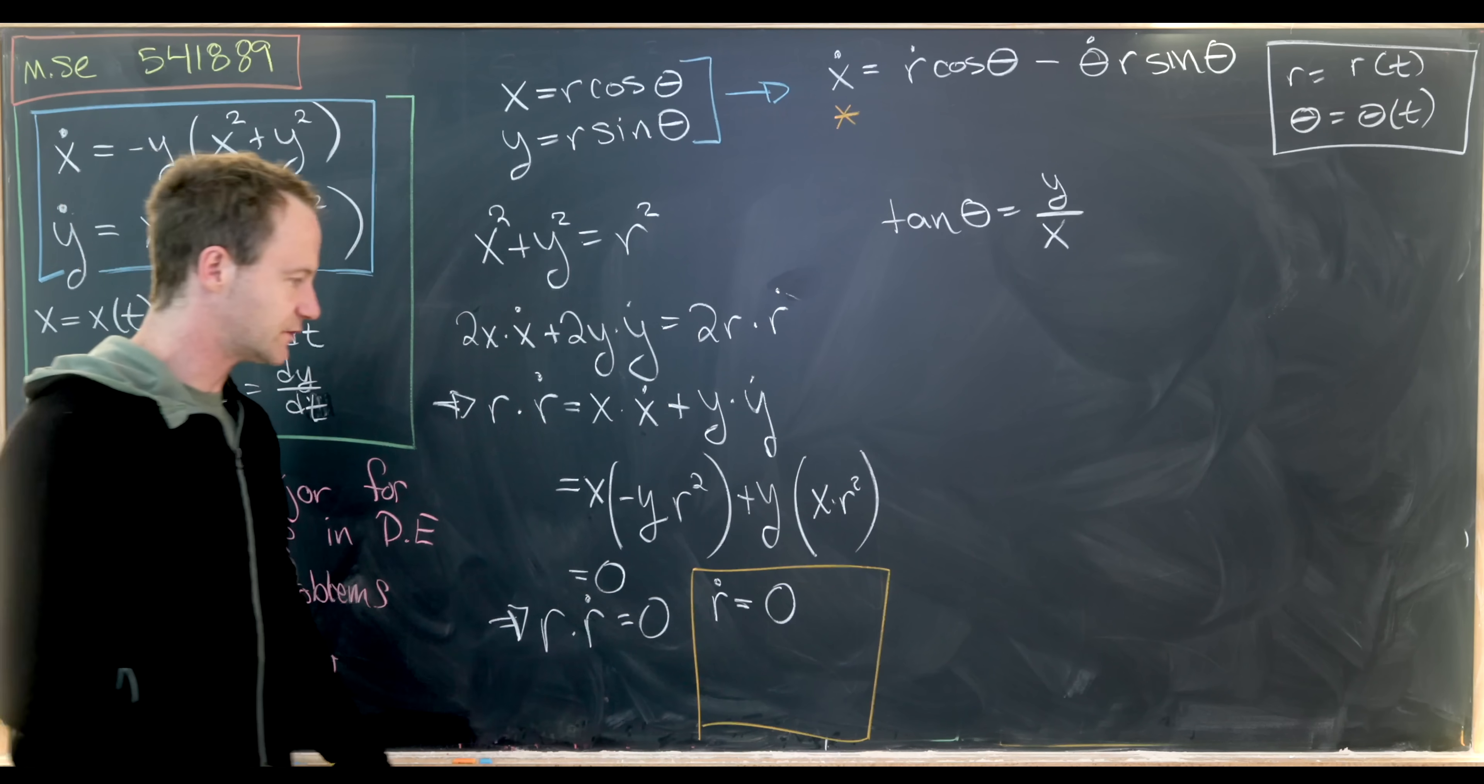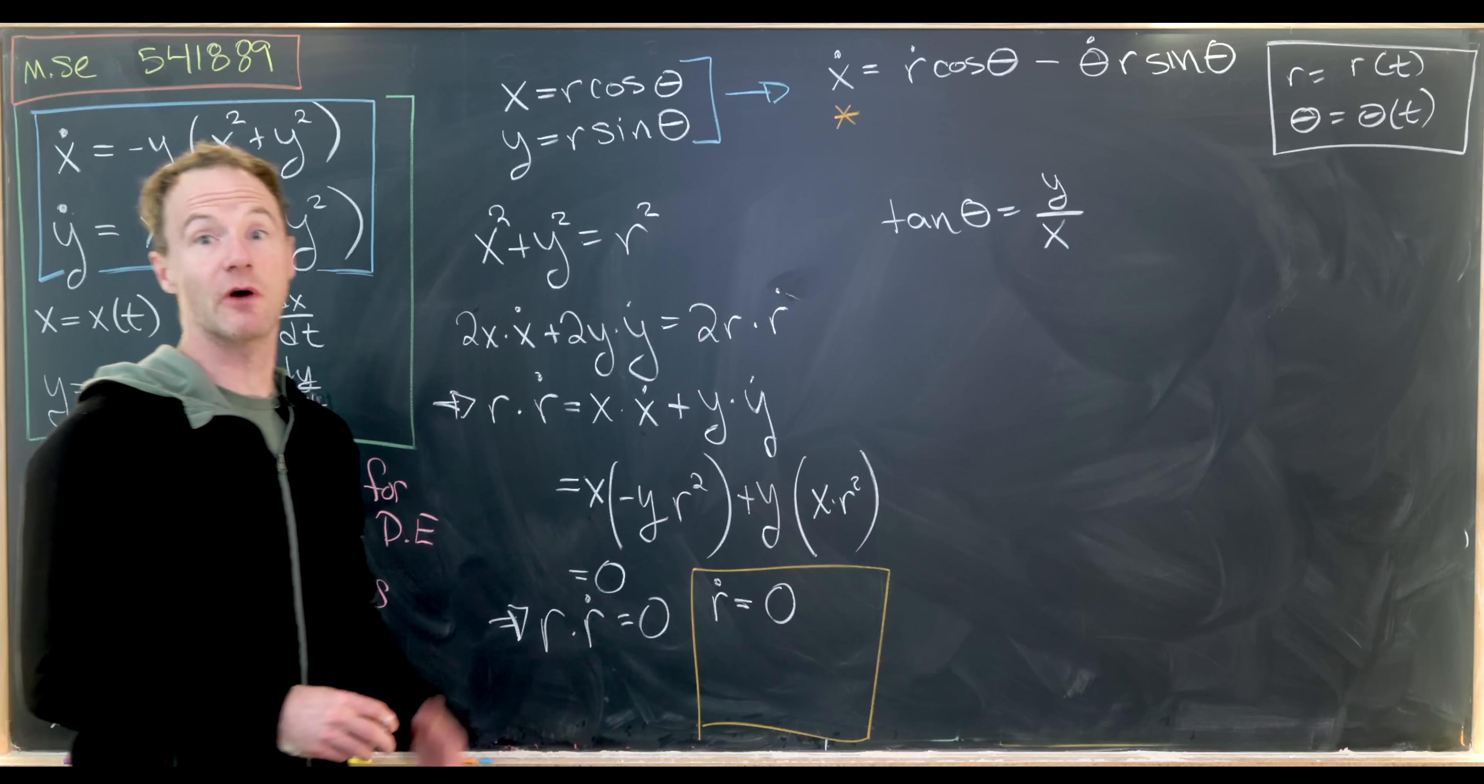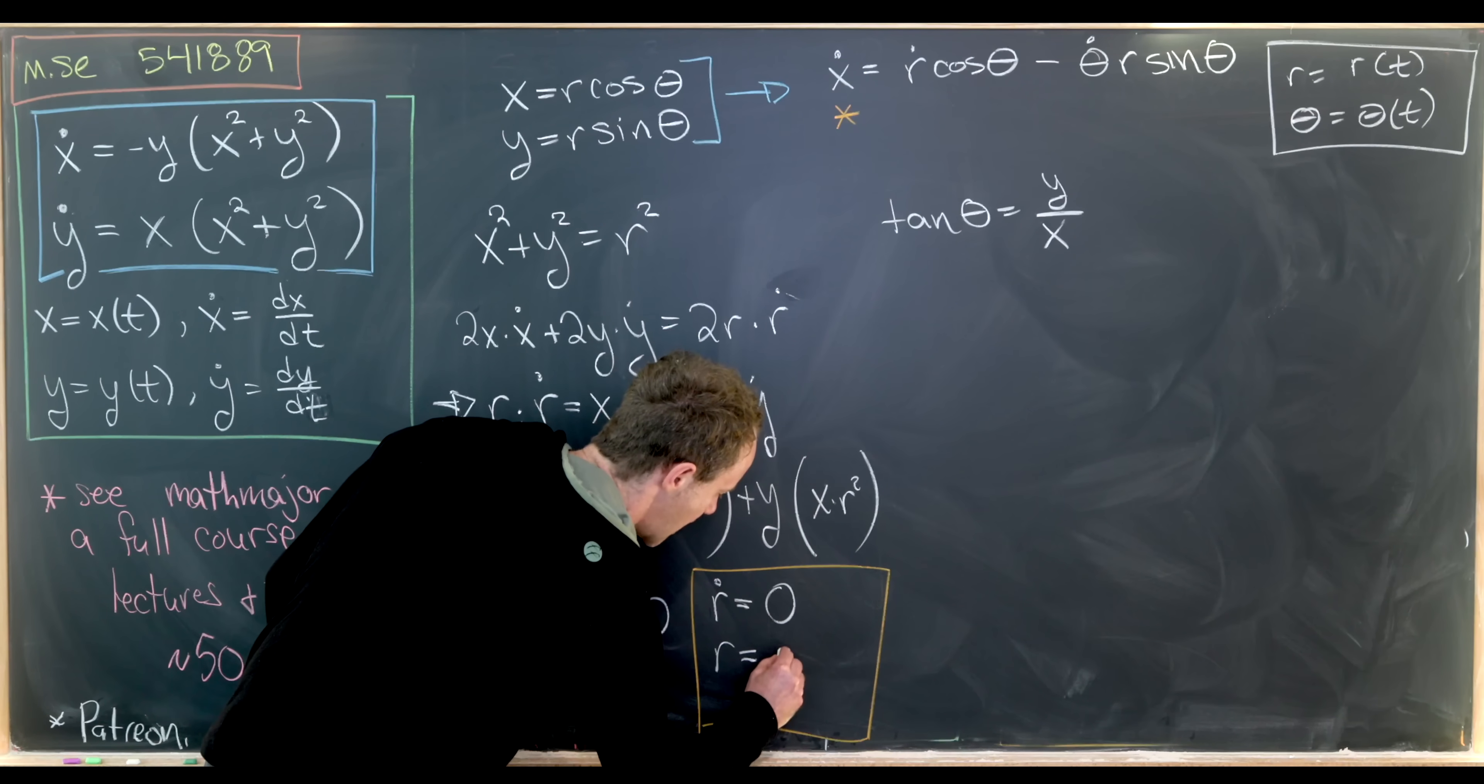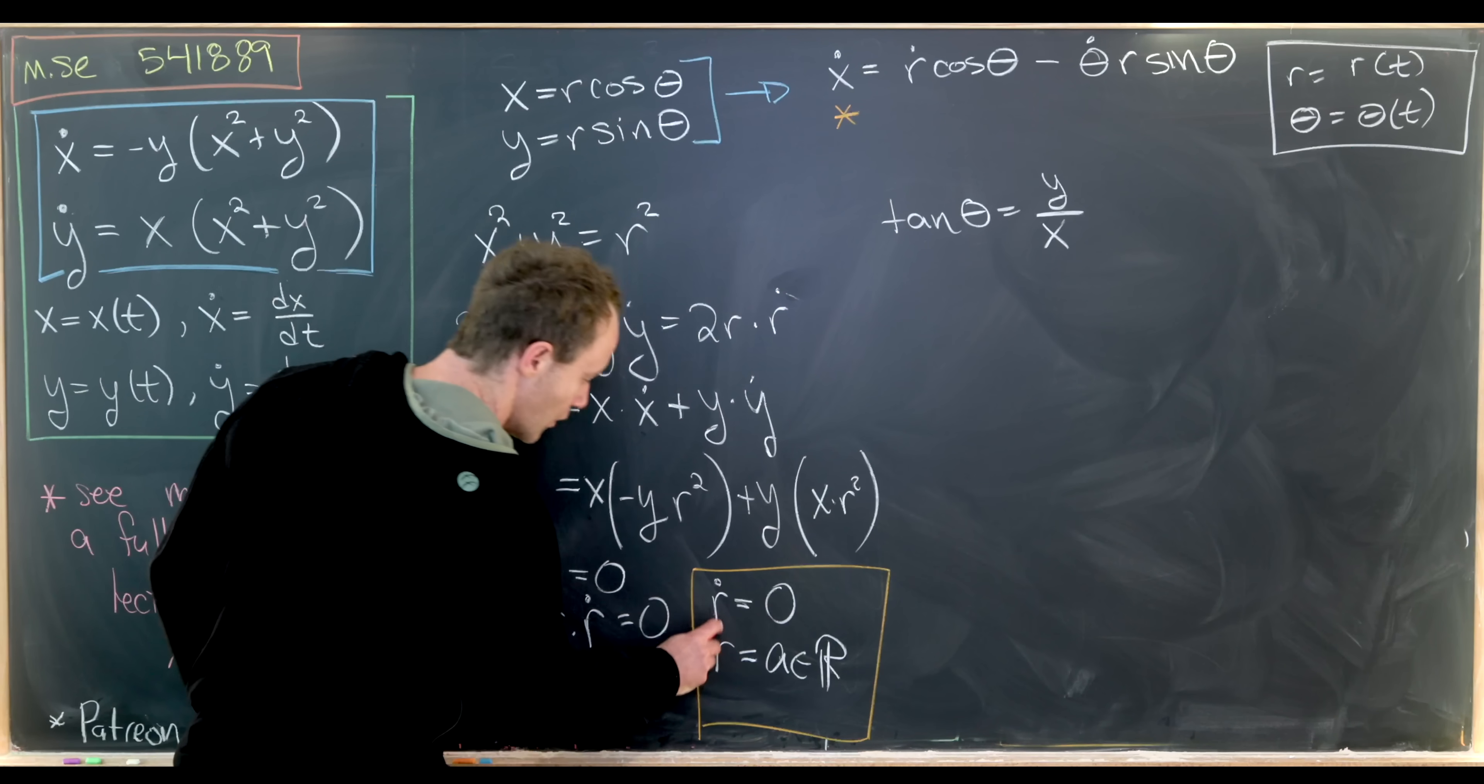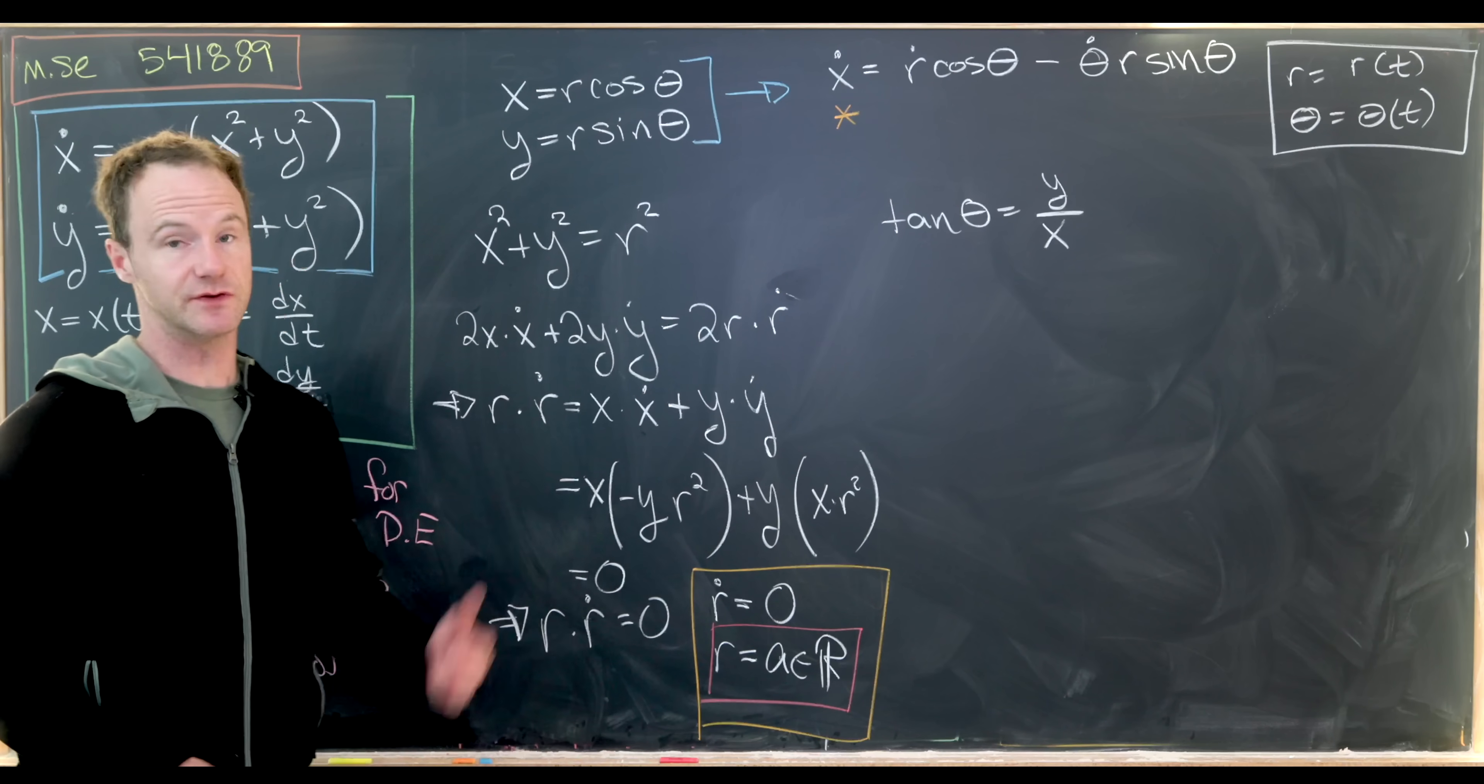But if r dot is equal to 0, what kind of function has the derivative that is 0? And that's just a constant function. So we have r is a constant. I'll call this constant maybe a. So there, we know what r is. It is just this constant a. So that's good news.